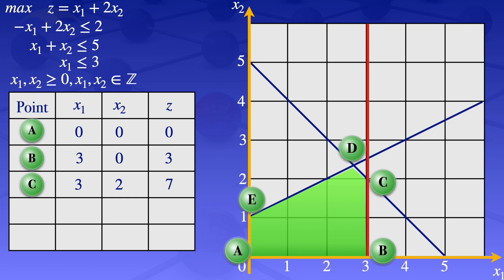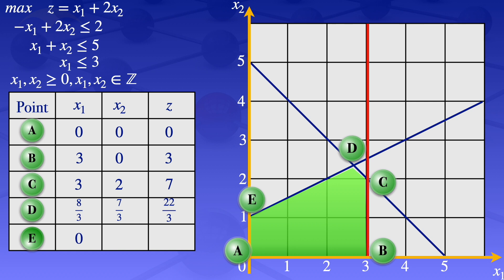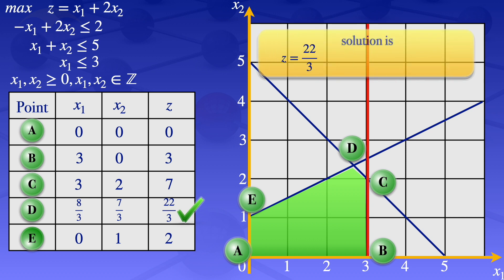Point D is the intersection of two lines, so to get the coordinates of point D we solve those two equations simultaneously. At point D, x1 = 8/3 and x2 = 7/3. Substituting into the objective function gives z = 22/3. At point E, x1 = 0 and x2 = 1, giving z = 2. Since this is a maximization problem, we choose the largest value of z, which is 22/3, occurring at x1 = 8/3 and x2 = 7/3.